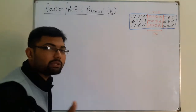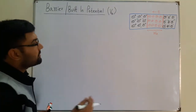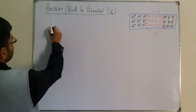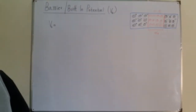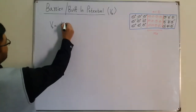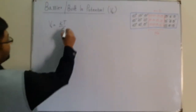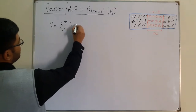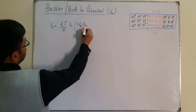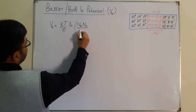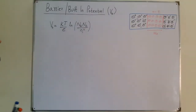In this video we talk about the relationship — the equation — of VB. We are not interested in the derivation, but I needed to tell you the formula. VB is equal to (KT/E) times the natural log of (NA × ND) divided by NI squared. This is the equation for the barrier potential VB.